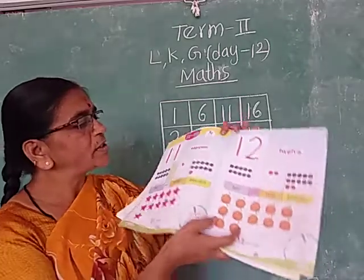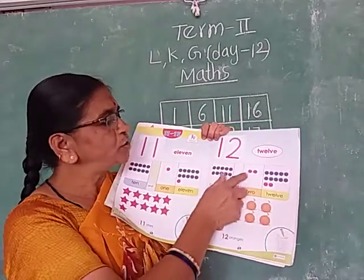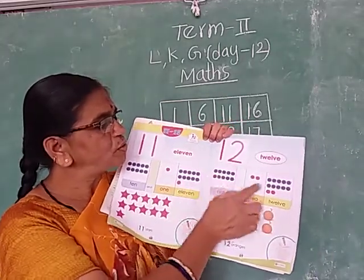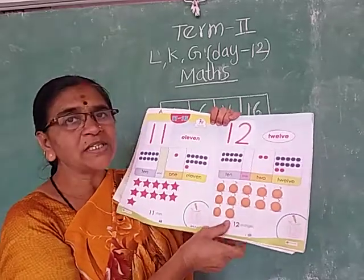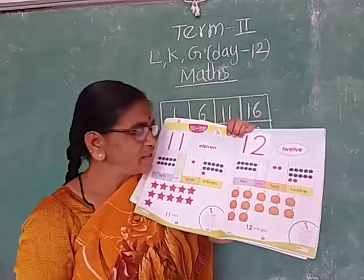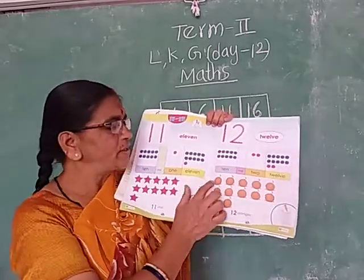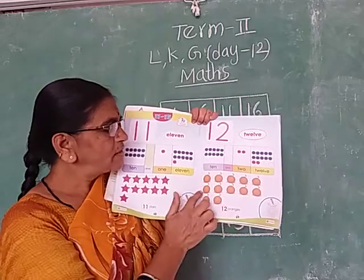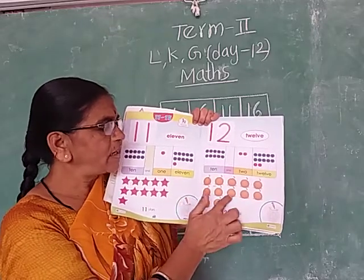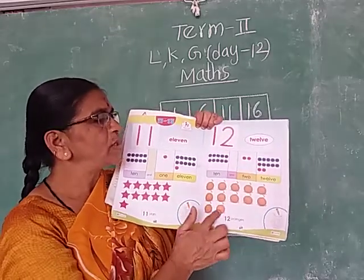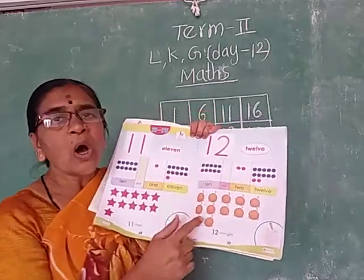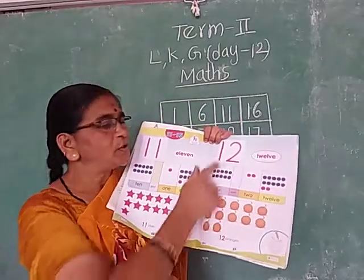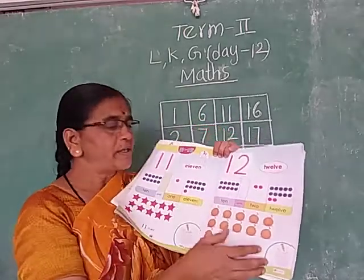Next number 12. 10 and 2 makes 12. What are these? These are oranges. Count the oranges: 1, 2, 3, 4, 5, 6, 7, 8, 9, 10, 11, 12 — 12 oranges. 10 and 2 makes 12 — 12 oranges.